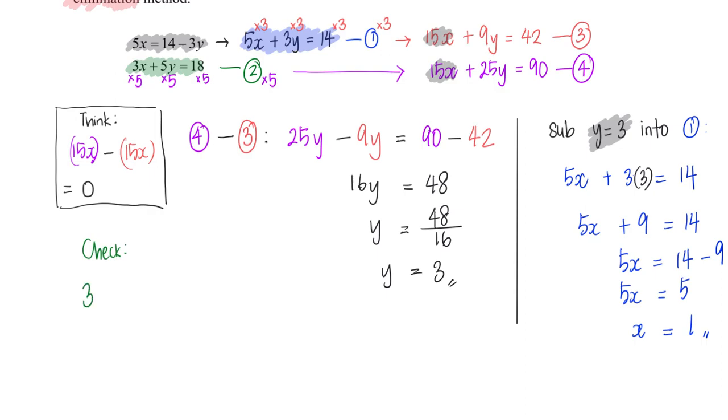I will have 3x, x is 1, plus 5y, y is 3. And does this give me 18? Yes it does. And so we have confirmed that our answers are correct.